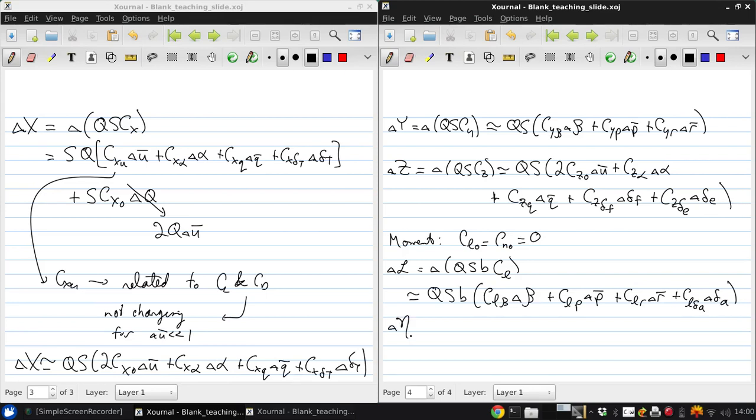And delta N, which is delta QSb Cn, will be approximately given by QSb times Cn beta delta beta plus Cn p delta p bar plus Cn r delta r bar plus Cn delta r delta delta r.